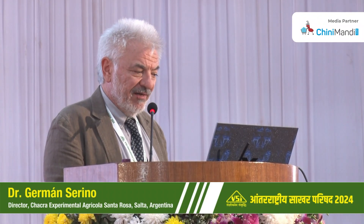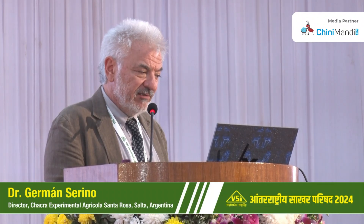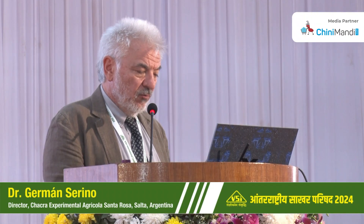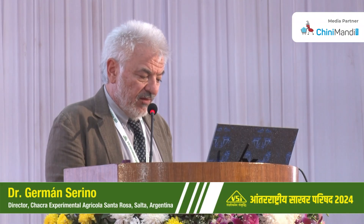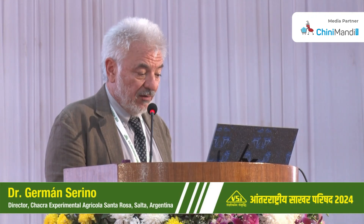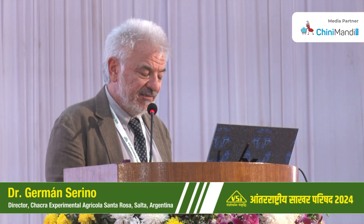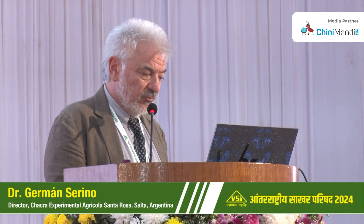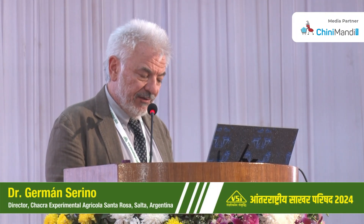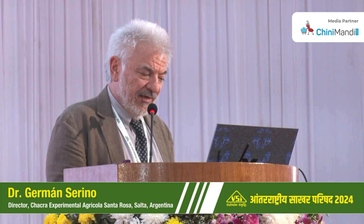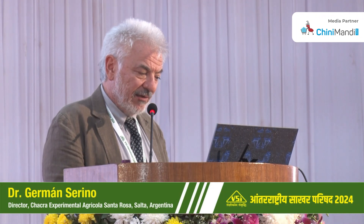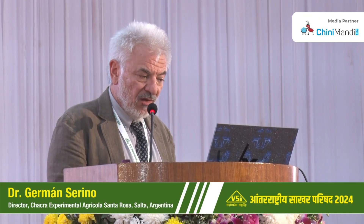The other species is Saccharum spontaneum, also called 'kans' here in India — a wild species distributed throughout Southeast Asia. This process of repeatedly crossing noble canes with wild canes was called mobilization: a recurring series of crosses between spontaneum and officinarum, with officinarum as the recurrent parent.